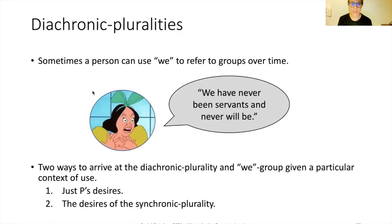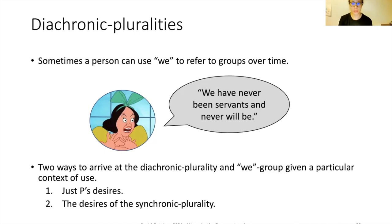Before moving on to how a person stage can pick out a diachronic plurality, I want to show how this fits in the overall scheme. This is the present time; these are future times and past times. In Drisella's utterance 'We are going to the ball but you are not,' she includes Anastasia but excludes Cinderella. This is the synchronic plurality by Drisella's lights.